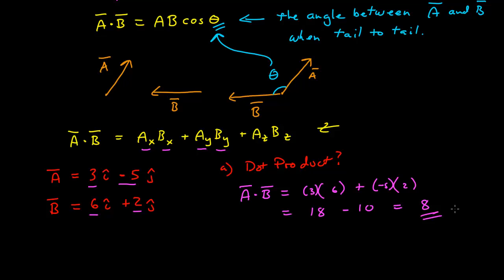If there were units on this — at the moment I've just had them dimensionless — the units would be the product of the units of vector A and B, like a multiplication.